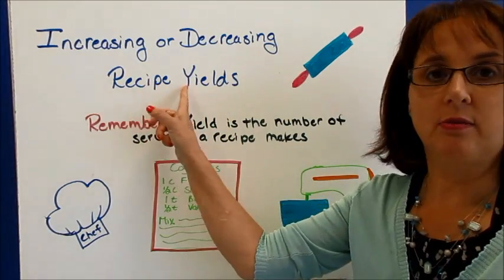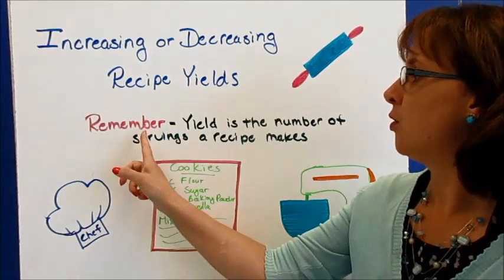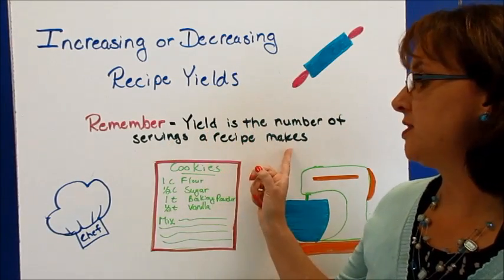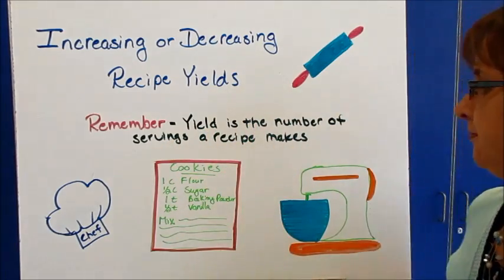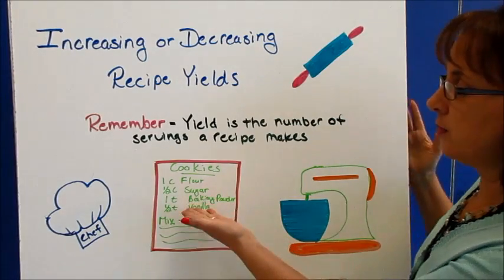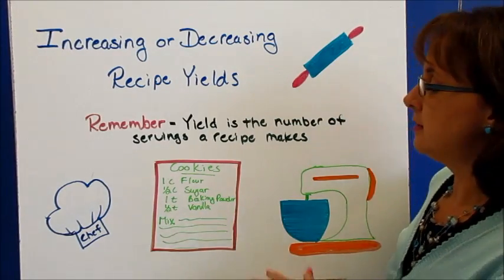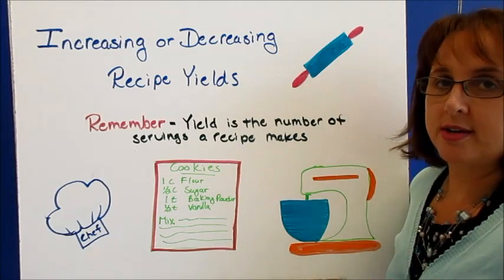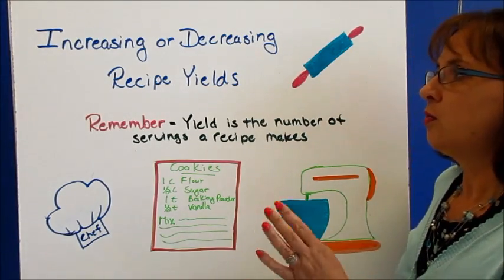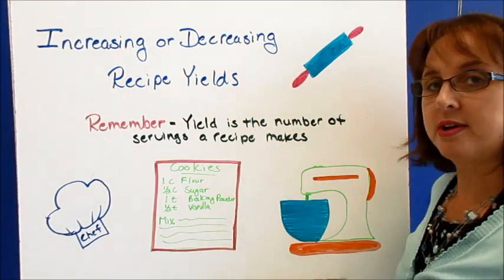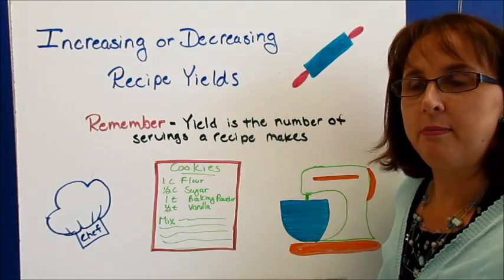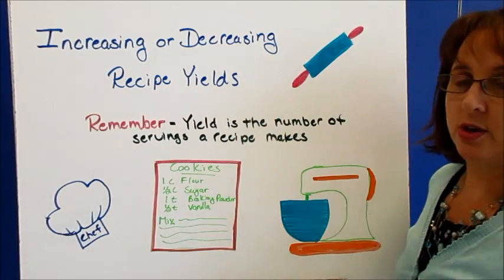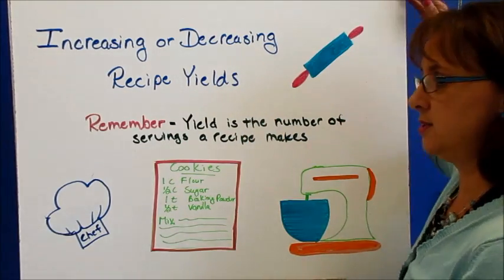Increasing or decreasing recipe yields. Remember, yield is the number of servings a recipe makes. For example, if we had a recipe that made two dozen cookies and we needed four dozen or ten dozen, we're going to have to increase our recipe. If our recipe made eight dozen and we only needed two dozen, then we would need to decrease our recipe.